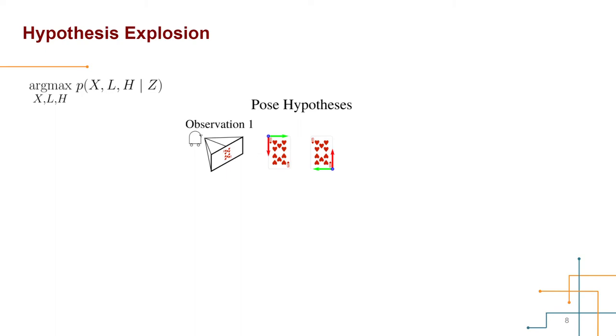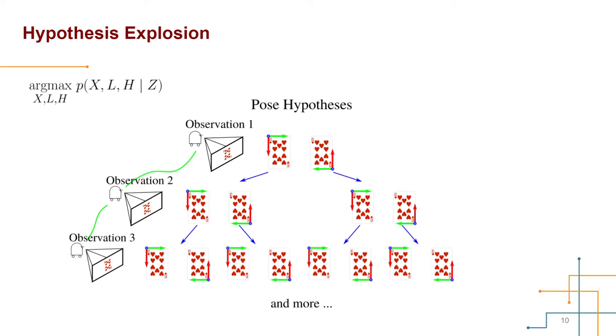For example, a single observation of the playing card has two pose hypotheses. As the robot makes more measurements during navigation, the space of the hypothesis will grow exponentially. It is in general intractable to solve this problem with guaranteed global optimality.